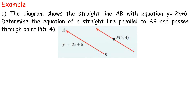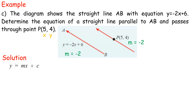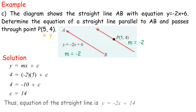Example c: The diagram shows the straight line AB with equation y equals negative 2x plus 6. Determine the equation of a straight line parallel to AB passing through point P(5, 4). Since the line is parallel to AB, gradient m equals negative 2. Substituting into y equals mx plus c: 4 equals negative 2 times 5 plus c, so 4 equals negative 10 plus c, giving c equals 14. Equation: y equals negative 2x plus 14.